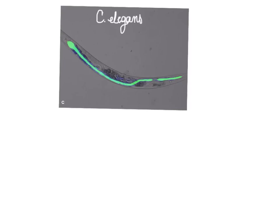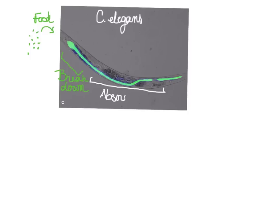Here, a single worm has been fed very small microbes — bacteria — that have been engineered to express a green fluorescent protein. This is the food that is ingested by the worm, and it also allows us to visualize the entire digestive tract. Early in the tract, we see regions where the food is broken down. We also have a long section associated with absorption of nutrients. And finally, we have the elimination of waste that occurs at the anus of the worm.